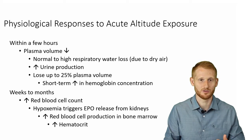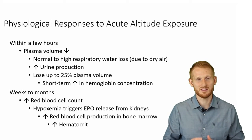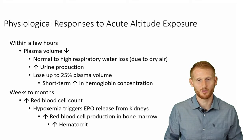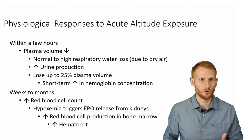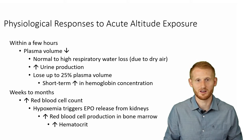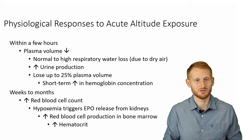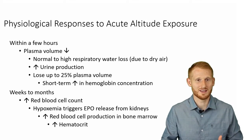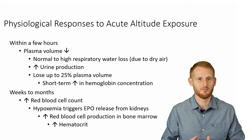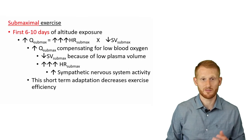In the weeks to months after going to altitude, once acclimated, you're actually going to have more red blood cells. Erythropoietin — abbreviated EPO — is released by the kidneys when they sense low oxygen content, and this causes increased red blood cell production over time. This is why athletes go to altitude to train or live, then come back to sea level with more oxygen-carrying capacity in their blood.